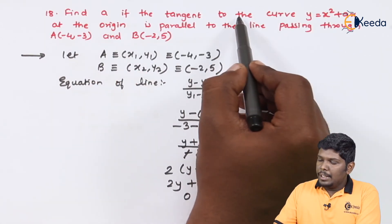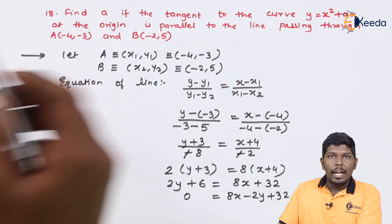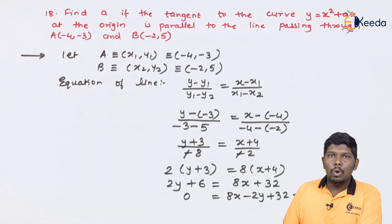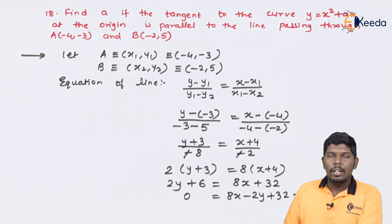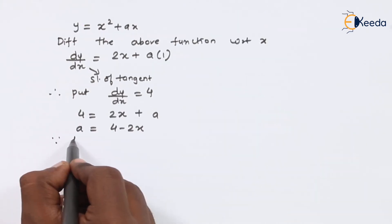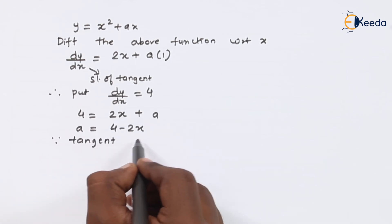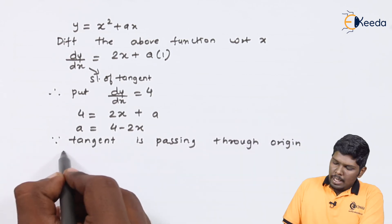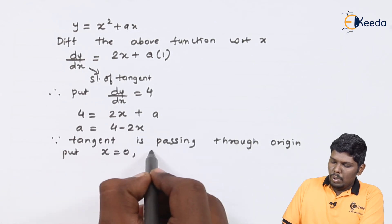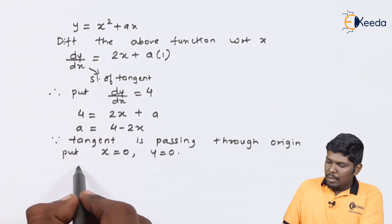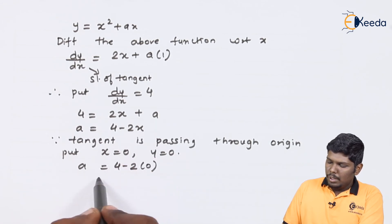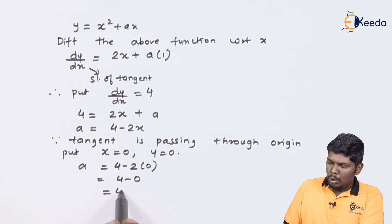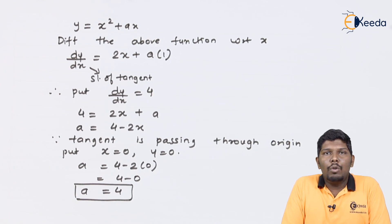The tangent to the curve is at the origin, meaning the tangent passes through the origin with coordinates (0, 0). Therefore we substitute x = 0: a = 4 - 2(0) = 4 - 0 = 4. So the value of a is 4. I hope friends you have understood this video, thank you for watching.